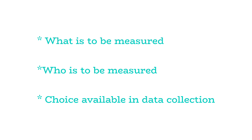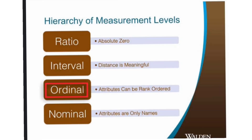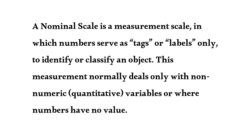Levels of Measurement Scale: numbers are assigned to four measurement scales. The first scale is the Nominal Scale, which is the simplest form of scale — used for measurement of different scores and different categories. The nominal scale assigns one value and does not indicate a relationship between two variables.